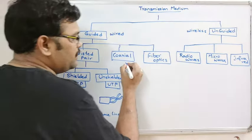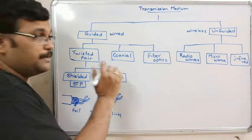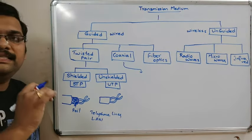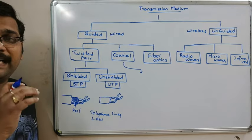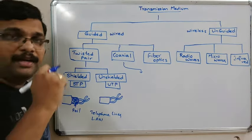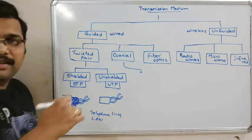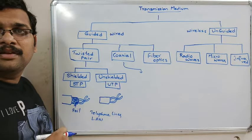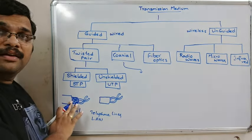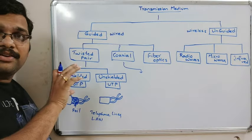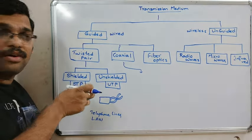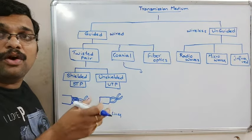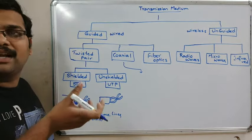Coming to coaxial cables — this is a copper cable enclosed with metal shielding, designed to provide immunity against noise and crosstalk. In twisted pair we reduce noise by twisting the cables, but in coaxial cables we enclose the copper wire with a metal shield which acts as a ground.